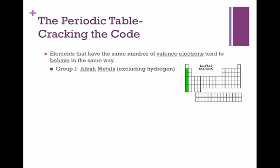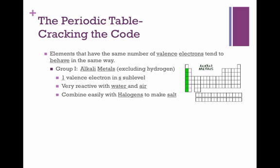The group 1 elements are called the alkali metals—that excludes the very first one, hydrogen. Alkali metals have one valence electron and it is in the s sublevel. All of these elements are very reactive with water and air, and they combine easily with halogens to make salt.